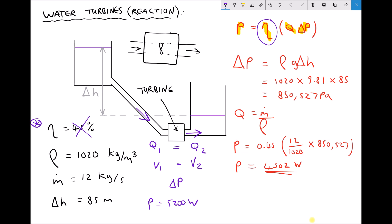So what we can now do is rearrange that equation and determine our new efficiency, because efficiency is just power divided by Q delta P. We've just said that our new power is 5200 watts. And we said previously that the volume flow rate was the mass flow rate of 12 divided by the density of 1020. Now assuming that our pressure drop remains the same, 850,527, then we're going to have a new efficiency for our turbine. And that new efficiency comes out to be 51.97%, or we can just round that to 52%.